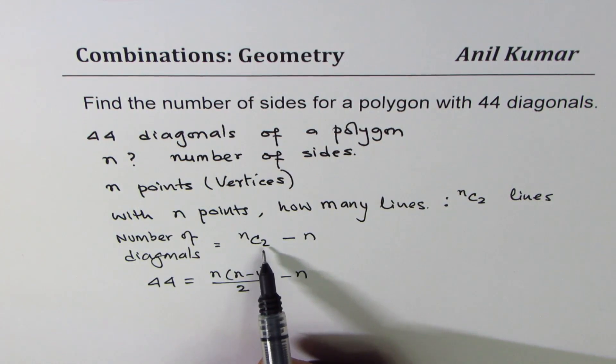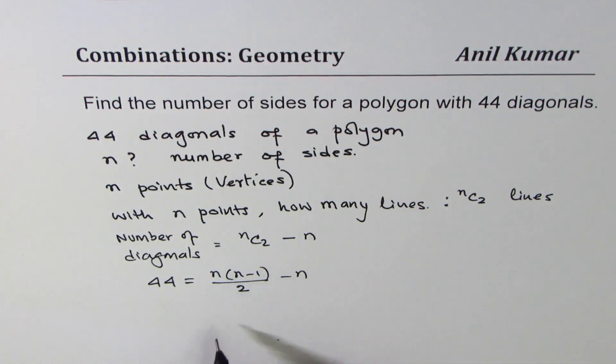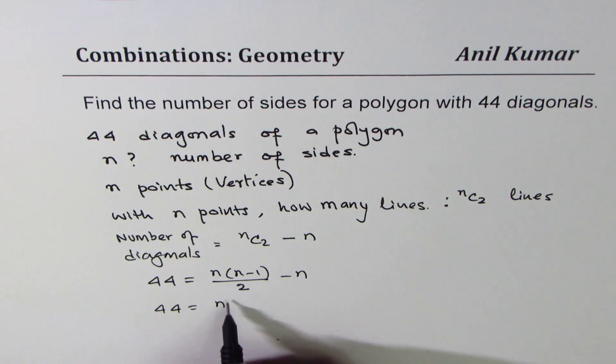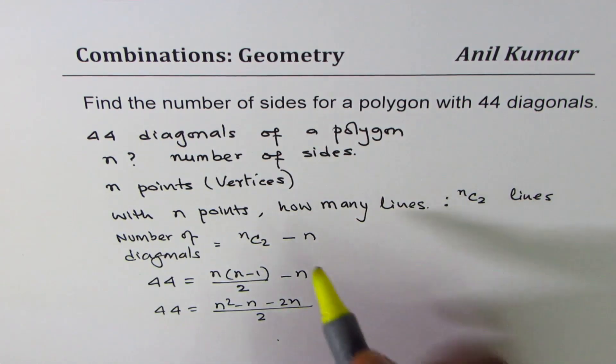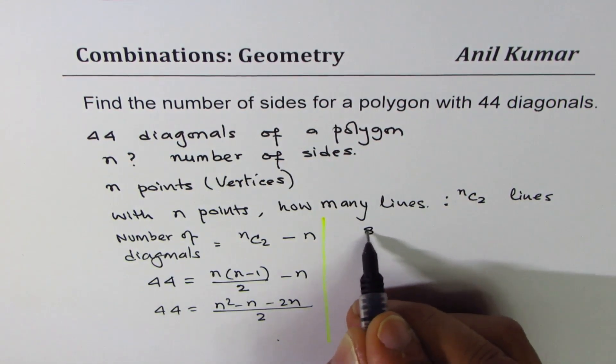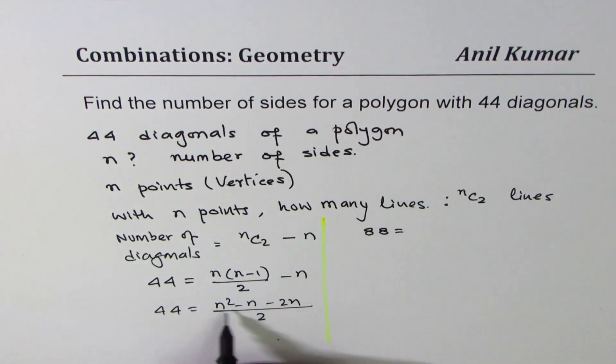Now we can rearrange and solve for n. So what we have is 44 equals to n squared minus n, taking common denominator of 2, we get minus 2n, right? So let me solve on this side. So cross-multiplying we have 88 is equals to n squared.